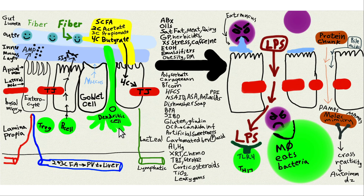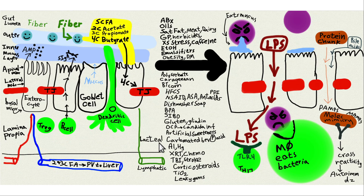Dendritic cells are sort of like security guards — they sense what's going on in the mucus lining around the gut lining cells. They're part of the immune system. B cells make secretory IgA that goes into the gut as protection. T regulatory cells suppress unnecessary immune responses. Lacteals absorb the chylomicrons. That's the background information.